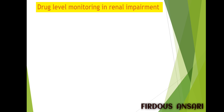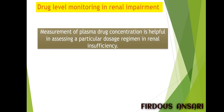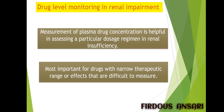For drug level monitoring in renal impairment, measurement of plasma drug concentration is helpful in assessing a particular dosage regimen in renal insufficiency. We need to perform therapeutic drug monitoring — check the plasma level of the drug and accordingly adjust the dosing in patients with renal impairment. This is most important for drugs with a narrow therapeutic range or effects that are difficult to measure. For drugs with a narrow therapeutic range, even a slight increase in dose may lead to the death of the patient, so therapeutic drug monitoring is very important for such drugs in patients with renal impairment.